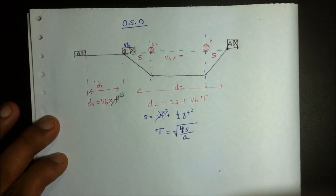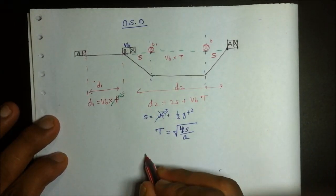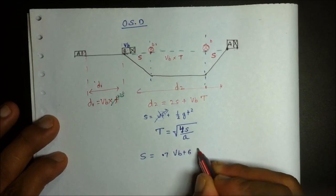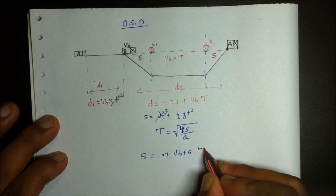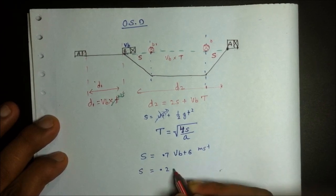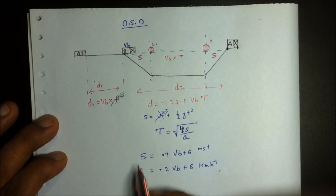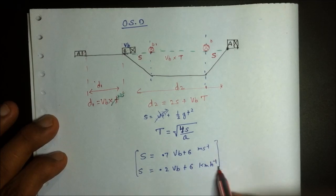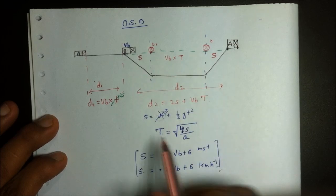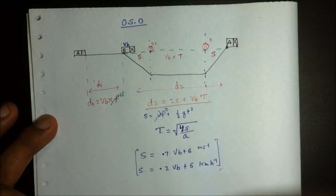For the calculation of space headway S: in meter per second, S equals 0.7 VB plus 6; in kilometer per hour, S equals 0.2 VB plus 6. These are the two formulas to calculate S. From S and T, we calculate 2S and VBT, which together give us D2.